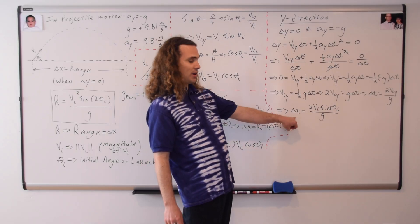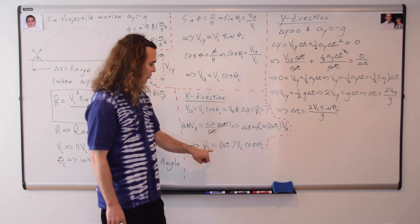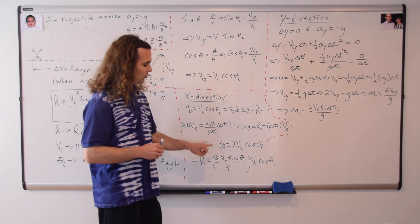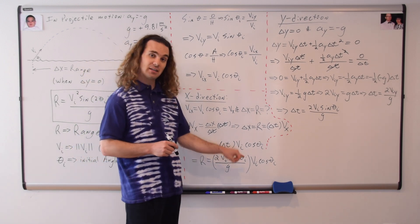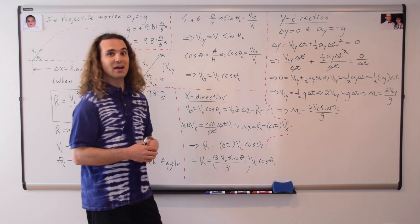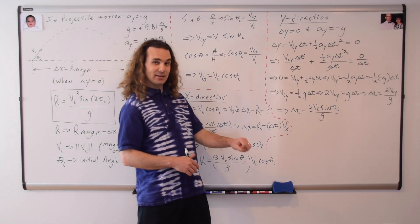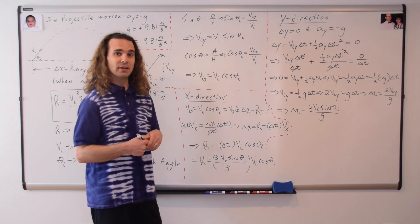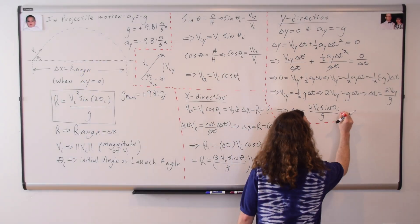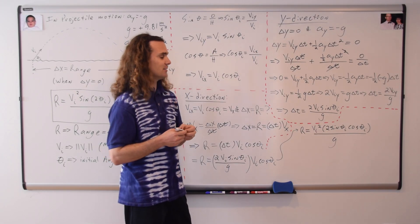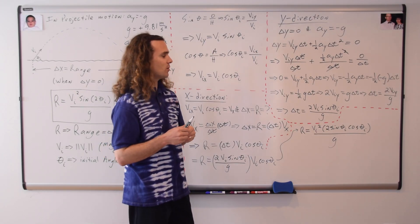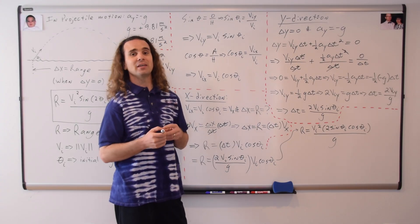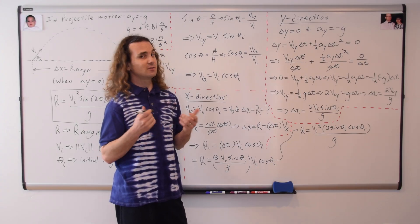Now we can substitute that equation for change in time back into our equation for range. We get that the range equals two times the magnitude of the initial velocity times the sine of the initial angle, divided by the acceleration due to gravity, all multiplied by the magnitude of the initial velocity times the cosine of the launch angle. Rearranging, the range of a projectile equals the magnitude of the initial velocity squared times two times the sine of the launch angle times the cosine of the launch angle, all divided by the acceleration due to gravity.